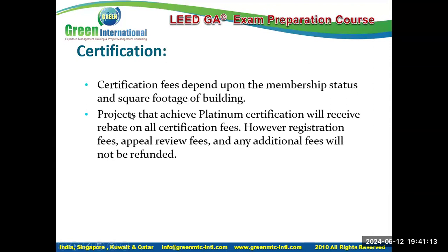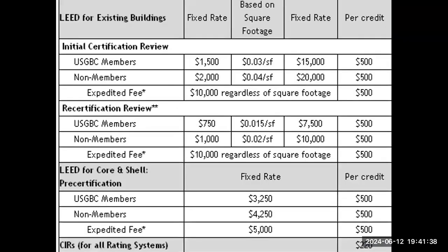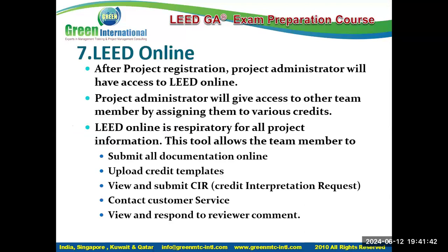Projects achieving Platinum certification will receive a rebate on certification fees; however, registration fees, appeal fees, and additional fees are not refunded. Certification fees vary by area (three categories by square footage). Remember: each appeal costs $500, and each CIR costs $220. You do not need to remember specific dollar amounts for other fees in the exam.